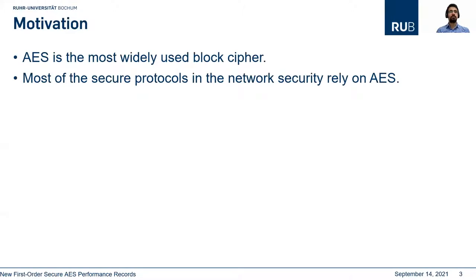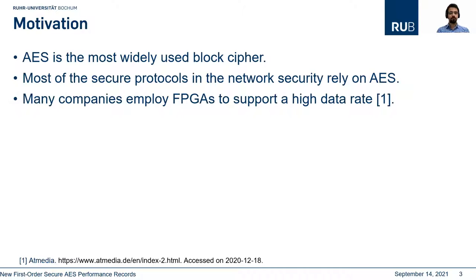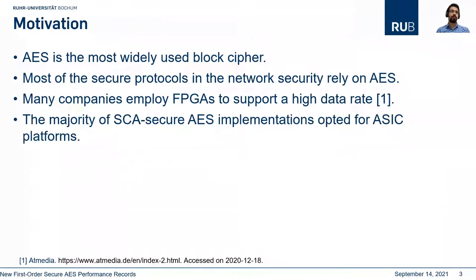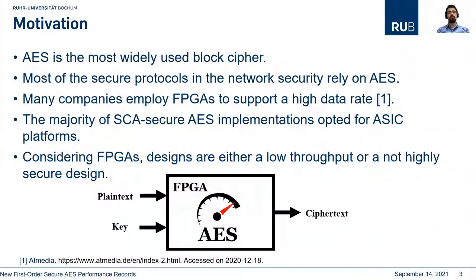In this work we focus on AES as the most widely used block cipher in literature and industry. In the context of network security we need high throughput AES implementations to support high data rate. To answer this demand, many companies use FPGAs. There is considerable body of work on side-channel secure ASIC platforms, but these are not necessarily optimized for FPGAs. Our goal is to introduce a high throughput side-channel secure AES which is optimized for FPGA platforms.